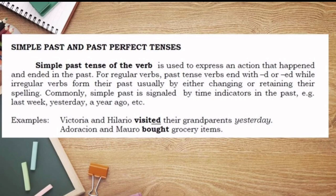Remember, when we talk about simple past tense, it's an action that already happened, and we have time indicators to signal that. When we say simple past tense, we have two forms: regular verbs and irregular verbs. For regular verbs, we simply add 'd' or 'ed,' or change 'y' to 'i' and add 'ed.' For example, 'Victoria and Hilario visited their grandparents yesterday' — 'visited' is the past tense of 'visit,' a regular verb, so we simply added 'ed.'